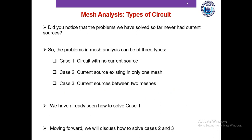Did you notice that the problems we solved so far never had any current sources? The problems in mesh analysis can be of three types: Case 1 — circuits with no current source; Case 2 — current source existing in only one mesh; and Case 3 — current sources between two meshes, just like nodal analysis. We've already seen how to solve Case 1, so moving forward we'll discuss how to solve Cases 2 and 3.